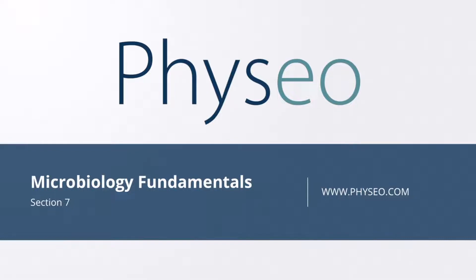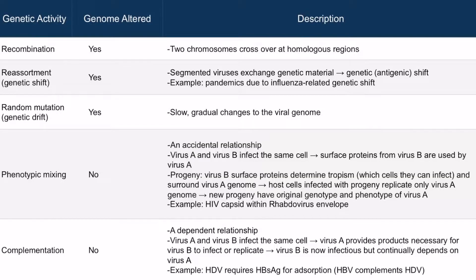Welcome to Section 7 of Microbiology Fundamentals. In this section, we'll be discussing viral genetics. Here is a table listing genetic activities of viruses. Some of them can alter the genome, which you can see with the top three examples, and some do not alter the genome.